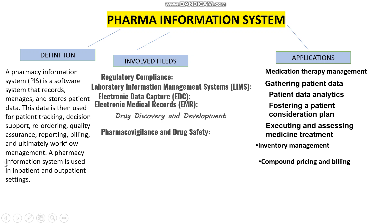A pharmacy information system is used in both inpatient and non-patient settings. Different fields that relate to the PIS system include regulatory compliance — where it is mandatory to have a pharmacy information system — as well as LIMS, electronic data capture, and electronic medical records.